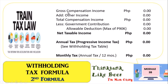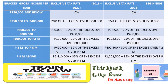The next formula is to get the net amount of operating income and place it under gross compensation income, then add other income to get the total compensation income. Minus the government contribution and allowable deduction — which is a maximum of 90,000 — to get your net taxable income. Once you have the net taxable income, you proceed with the computation of progressive income tax or yearly tax. The table used comes from the TRAIN Tax Law.